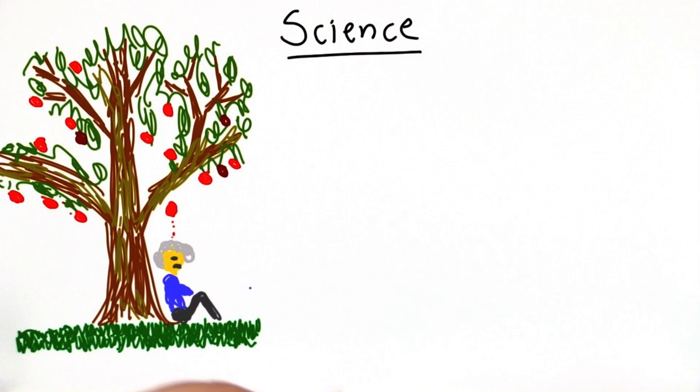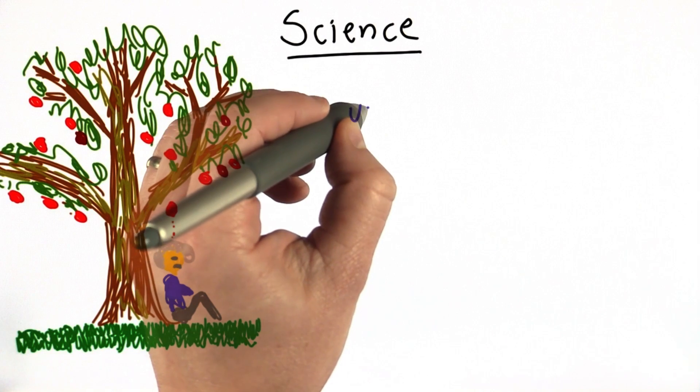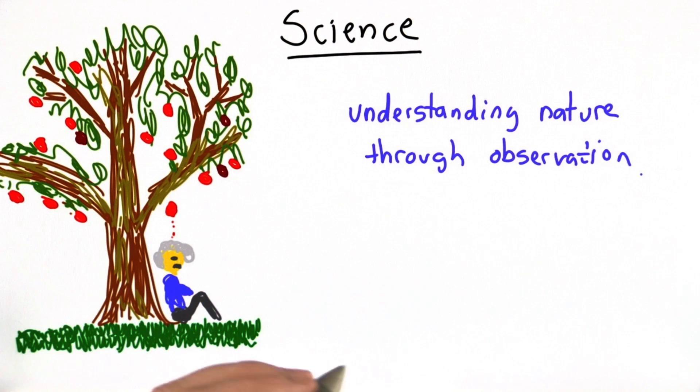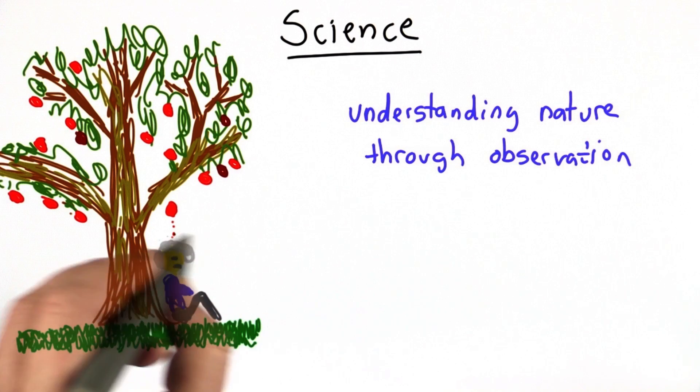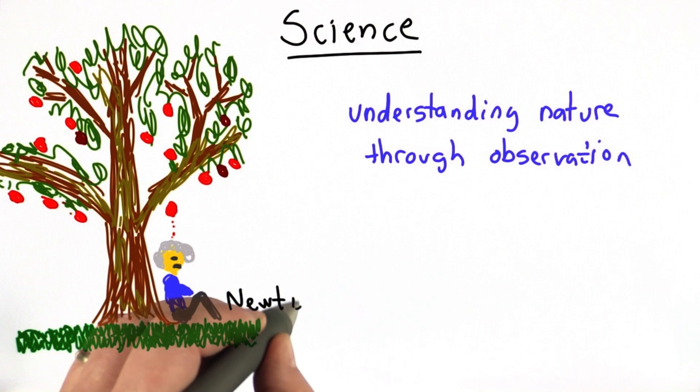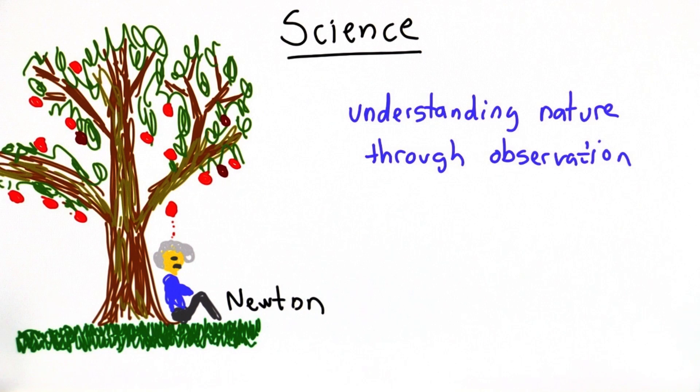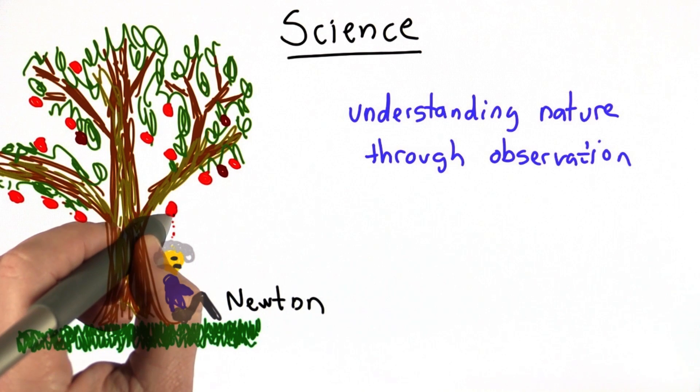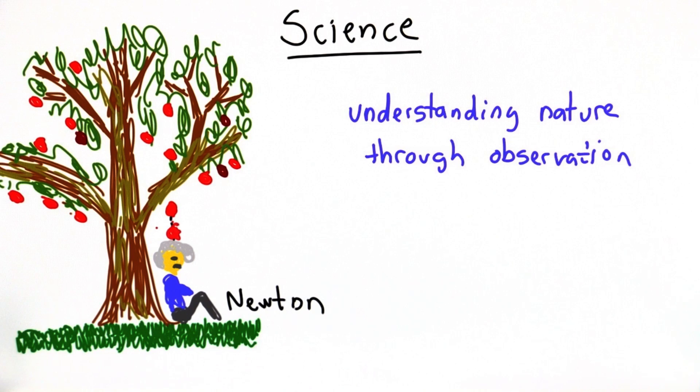So we tend to think about science as understanding nature through observation, and our favorite example of this is Sir Isaac Newton. If you can't recognize this, this is obviously Newton because he's sitting under an apple tree, and the probably untrue story of him understanding gravity because of an apple falling on his head.